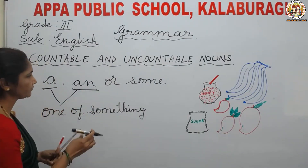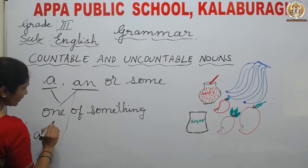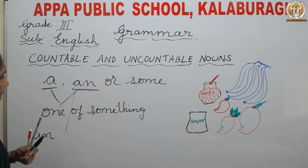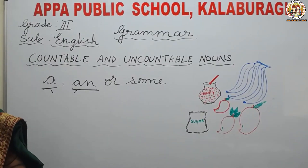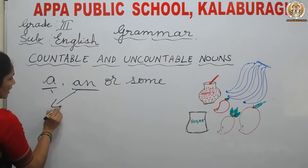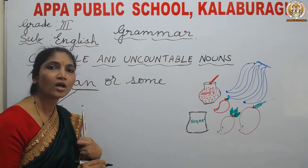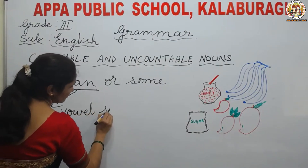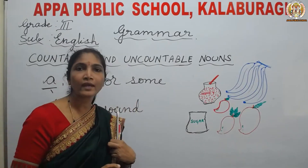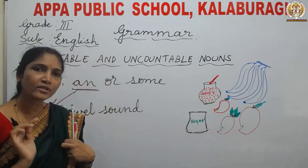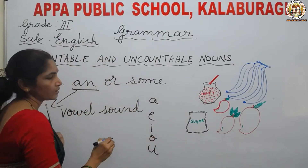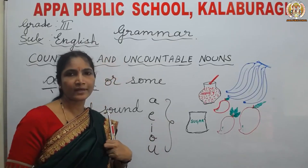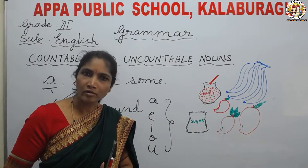When do we use an? We use an when the countable noun starts with the vowel sound. Which are the vowels? A, E, I, O, and U. These five are the vowels in English alphabets, and the remaining 21 letters are called consonants.